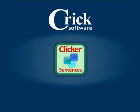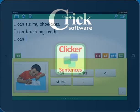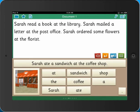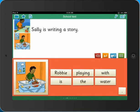Clicker Sentences, an innovative app from Crick Software, develops writing skills in young pupils, struggling writers and English language learners, helping them build their first sentences one word at a time.